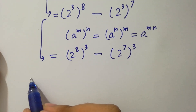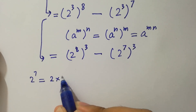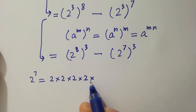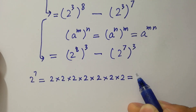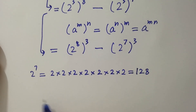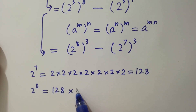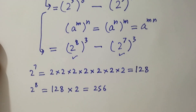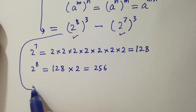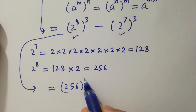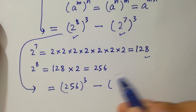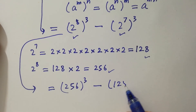As 2 to the power 7 equals: 2 times 2 is 4, 4 times 2 is 8, 8 times 2 is 16, 16 times 2 is 32, 32 times 2 is 64, and 64 times 2 is 128. And 2 to the power 8 will be equal to 128 times 2, which equals 256. By putting these values we have 256 to the power 3 minus 128 to the power 3.